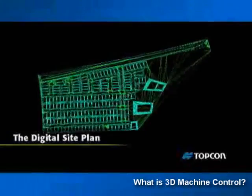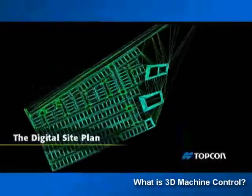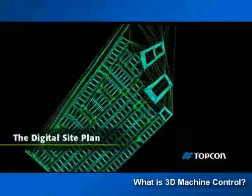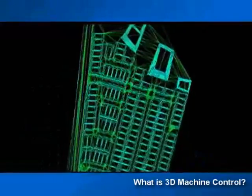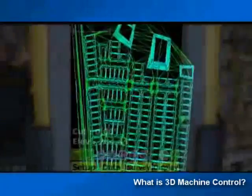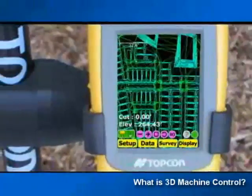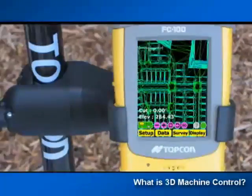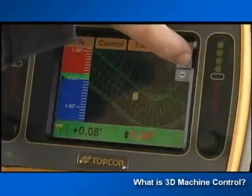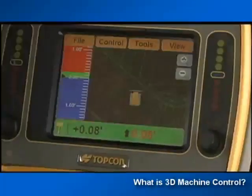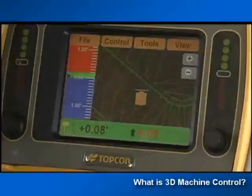The nerve center of job site automation and 3D machine control is the site plan, which is basically a digital version of the paper plans you work from now. Sometimes called a Digital Terrain Model, or DTM, the big advantage to working with a digital site plan is that you can plug it into any component of the system and have all the specs for the entire job accessible.